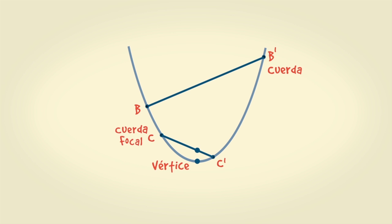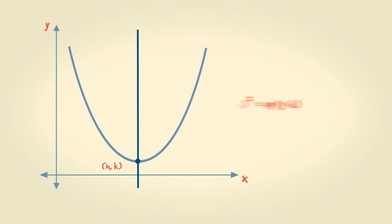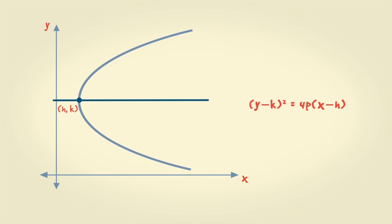Si la cuerda pasa por el foco, se dice que es una cuerda focal C, C'. Si esta es perpendicular al eje, se llama lado recto L, L'. El segmento de recta F, P, que une el foco con cualquier punto P, se llama radio focal de P. La ecuación de una parábola de vértice H, K y eje paralelo al eje Y es... y si el eje es paralelo al eje X.